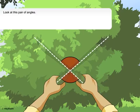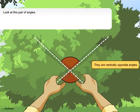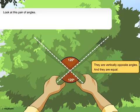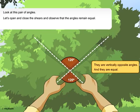Look at this pair of angles. They are vertically opposite angles and they are equal. Now let's open and close the shears and observe that the angles remain equal.